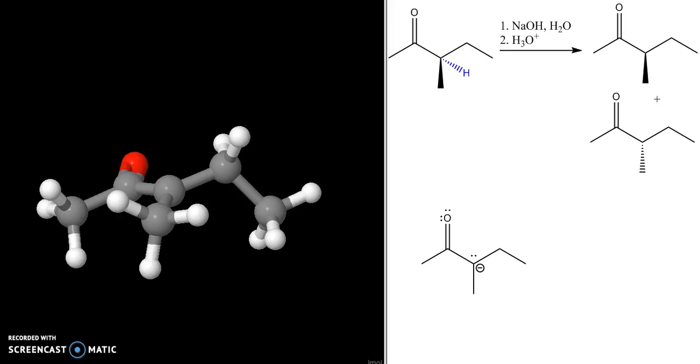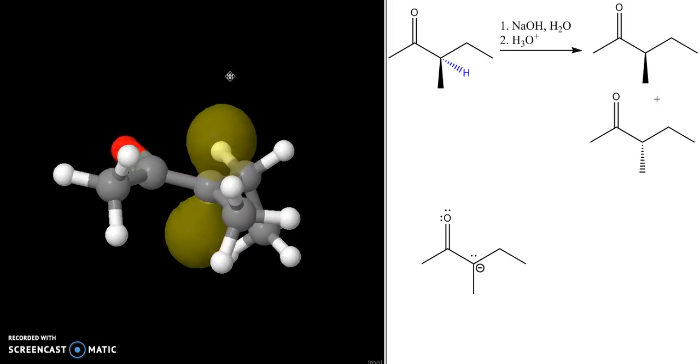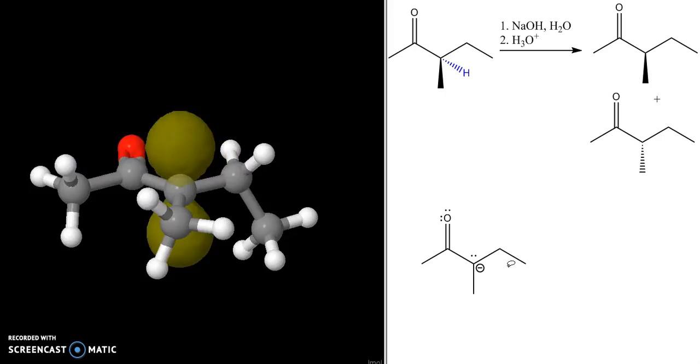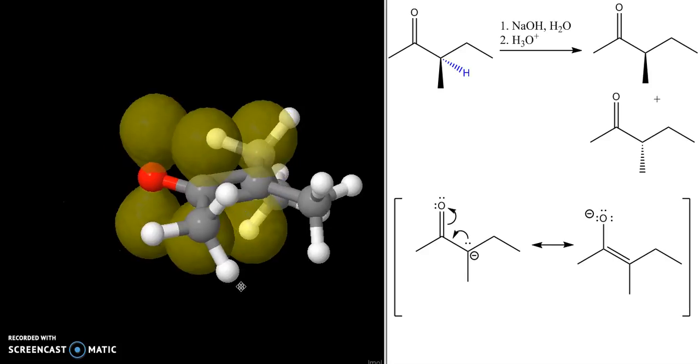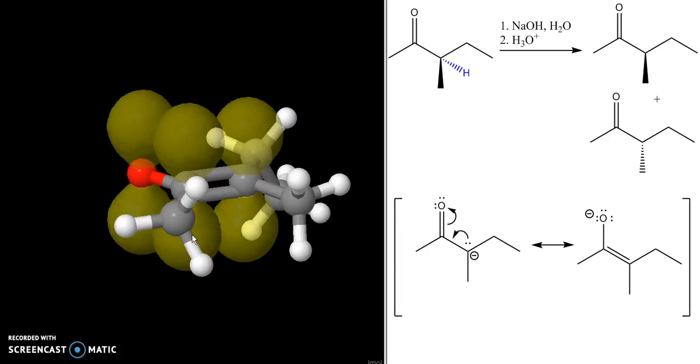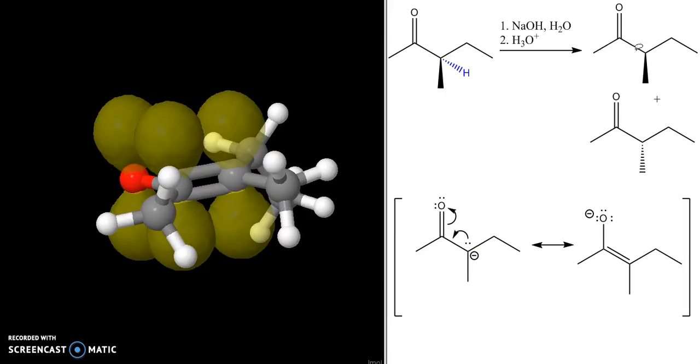Since it's conjugated to this carbonyl group, I can also draw another resonance structure for this molecule like this. In this resonance structure, all three p orbitals on all three of the atoms in our conjugated system are overlapping. Now I want to focus on this first resonance structure in trying to explain these two products.